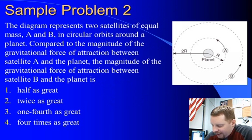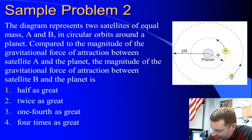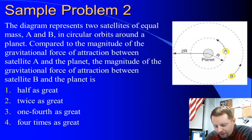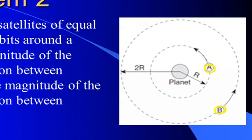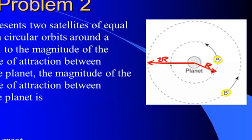Let's take a look at one more. This diagram represents two satellites of equal mass, satellite A and satellite B, that are in circular orbits around a planet. Compare the magnitude of the gravitational force of attraction between satellite A and the planet, and the magnitude of the gravitational force of attraction between satellite B and the planet. And to do this, we have to note that the distance between the center of A and the center of the planet is 1r, and the distance between the center of the planet and our second satellite B is 2r, twice as great.